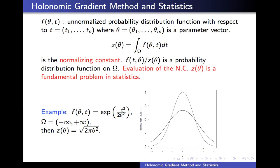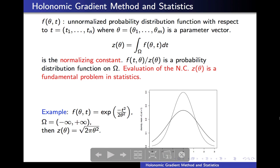We would like to explain here about the holonomic gradient method and applications to statistics. Let theta be a parameter vector. We consider an unnormalized probability distribution on the T space. The function z is called the normalizing constant. Then f divided by z is a probability distribution on the set omega — a non-negative function on omega such that the integral over omega is 1.